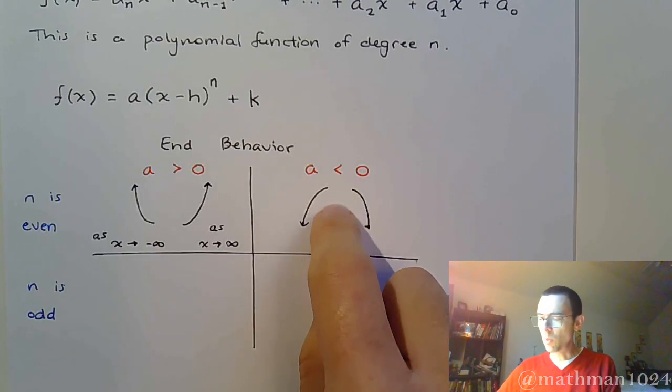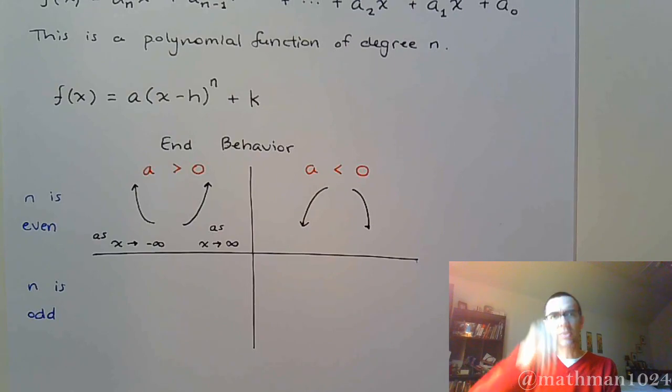Now it could have a lot of weird things going on, little humps and bumps and stuff in the middle. But what we're saying is that as x gets really, really big, either towards negative infinity or positive infinity, the end behavior, that lead term is going to have to take over.